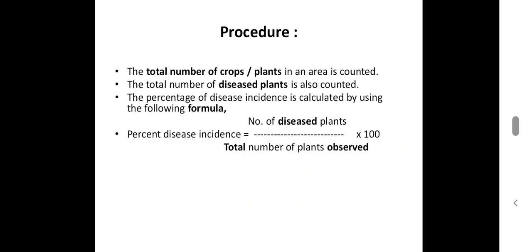Then, next one. That is procedure. How to calculate the disease incidence? First, you have to calculate the total number of crops or plants in the field. Then, calculate the diseased plants. Then, put the both values in the formula. That is, percent disease incidence which is equals to number of diseased plants upon total number of plants observed multiply by 100.